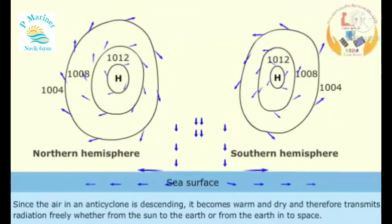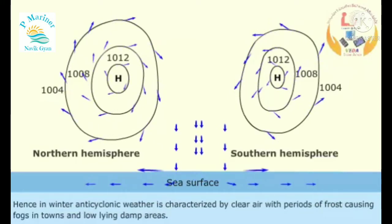Since the air in an anticyclone is descending, it becomes warm and dry and therefore transmits radiation freely whether from the Sun to the Earth or from the Earth into space.